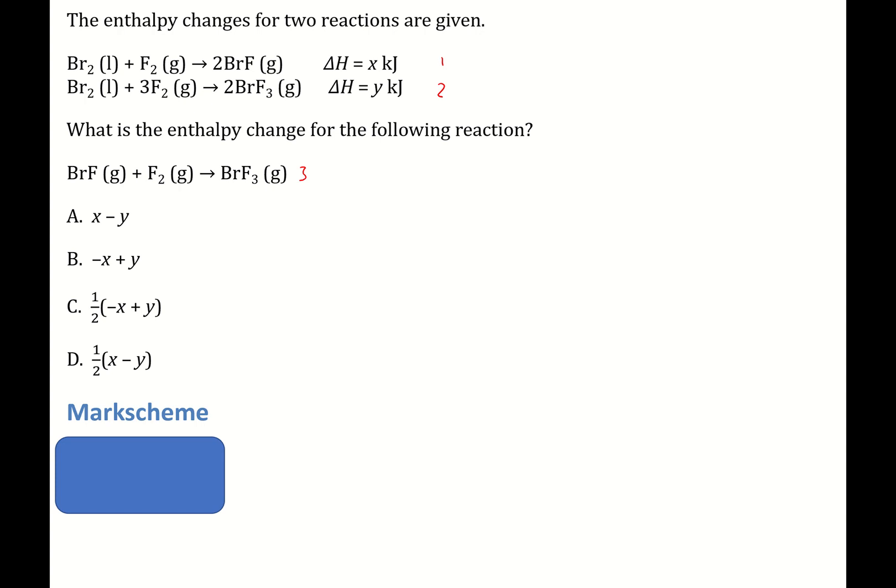So the first thing I do, I'm looking at reaction number 1. And I can see that I've got BrF, but 2 moles of it on the product side, but I need it on the reactant side. So there's 2 moles here on the products. So I'm going to flip it. And when I'm flipping this, I also need to account for the number of moles. So let's just flip it first.